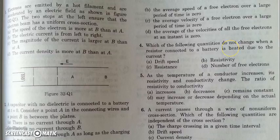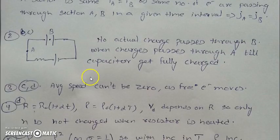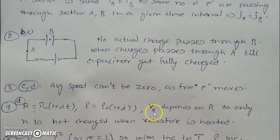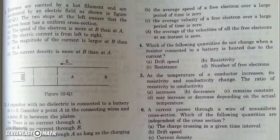In the fourth question, we need to find which quantity does not change when a resistance is heated by current. Resistance changes according to R = R₀(1 + αT), resistivity also changes by the same relation, and drift velocity V_D depends on resistance so it also changes. However, the number of free charges is a material-dependent quantity and will not change when the resistance is heated.